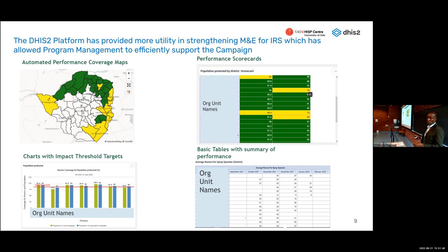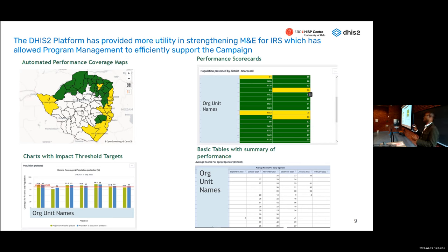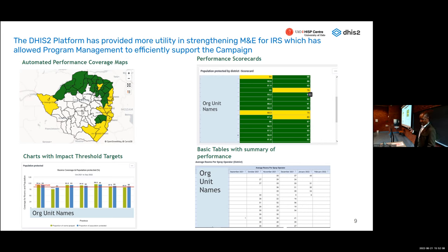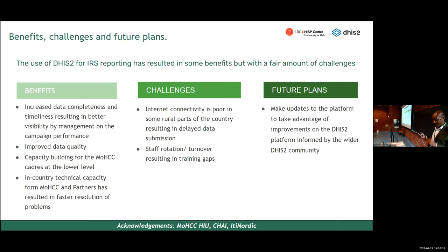The dashboard showed targets — rooms sprayed, population protected — all viewable on a daily basis. It improved how we analyzed data because it was done daily. Those who failed to report could easily be followed up to ensure data submission. One of the key benefits was increased data completeness and timeliness, resulting in better visibility by management and those responsible for vector control.